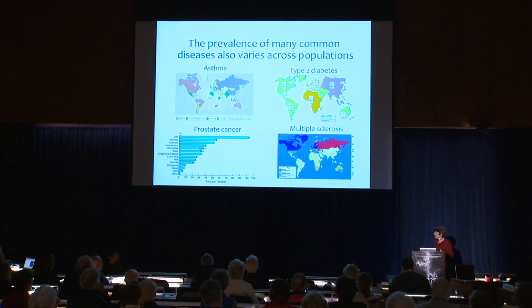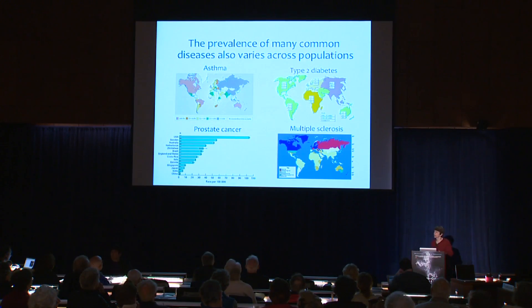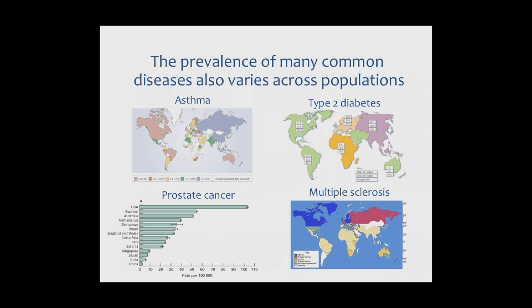Some of the phenotypes that vary across human populations are actually diseases. Many common diseases have significant interethnic differences, including diseases of the immune response like asthma and multiple sclerosis, but also metabolic diseases like type 2 diabetes, and different types of cancers like prostate cancer.